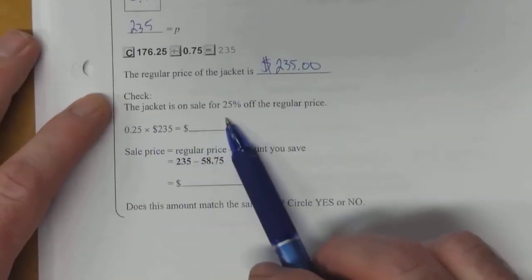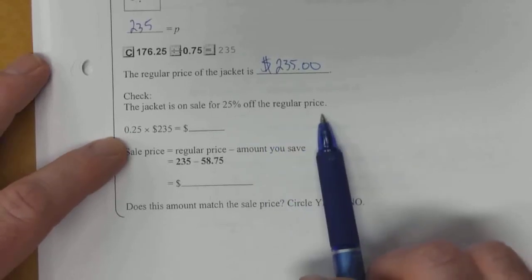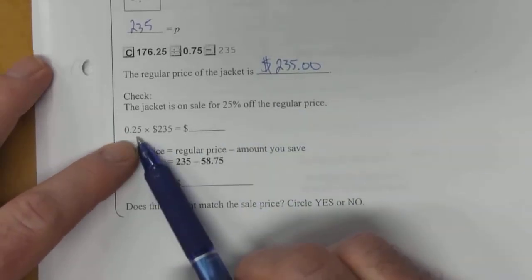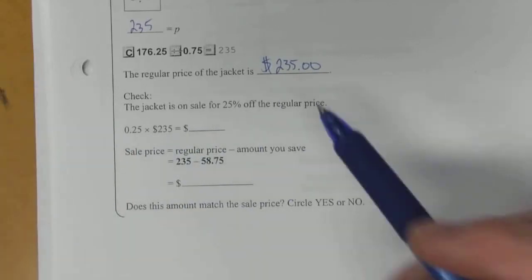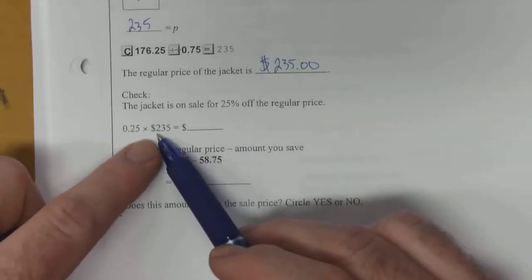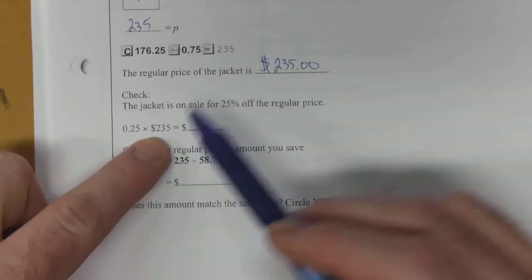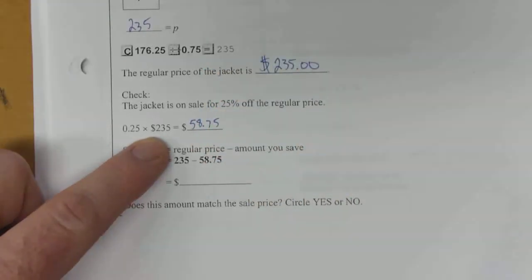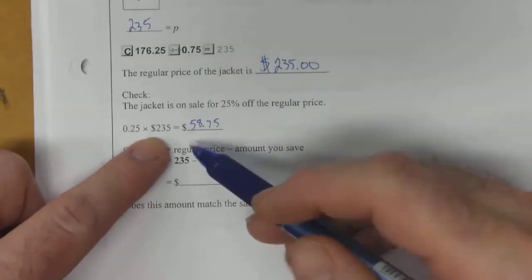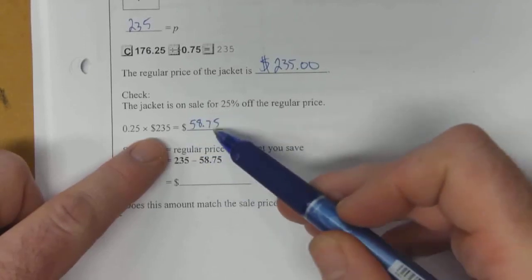So we can check this. The jacket is on sale for 25% off the regular price. What is 25% of the regular price? We can calculate this in a bit of a different sort of way. So 0.25 times 235, that works out to be $58.75. So that's 25% of the regular price. That's how much we're actually saving.